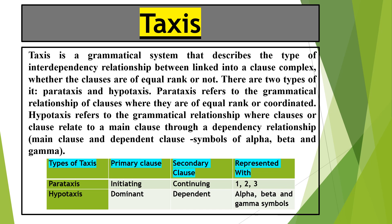When we want to explain whether the clauses present in any clause complex are independent, dependent, or what type of relationship they have, this is called taxis. Now, you have two types of relationships: parataxis and hypotaxis. Parataxis refers to grammatical relationships where both clauses are of equal rank or coordinated. Hypotaxis is where clauses are not of equal rank and there is a dependency relationship. Parataxis is when you have an equality relationship.